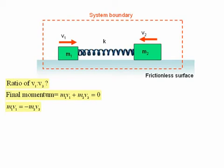Therefore, m1 v1 is just equal to minus m2 v2, and therefore the ratio of v1 over v2 is equal to minus m2 over m1.